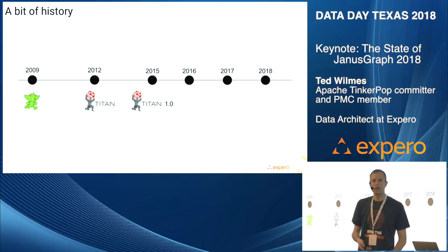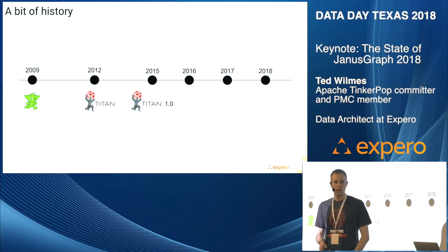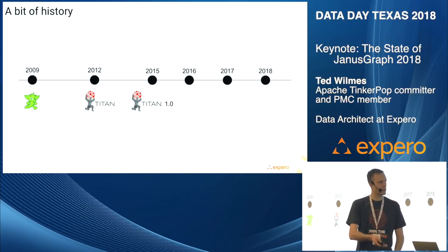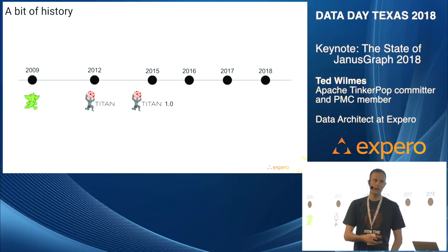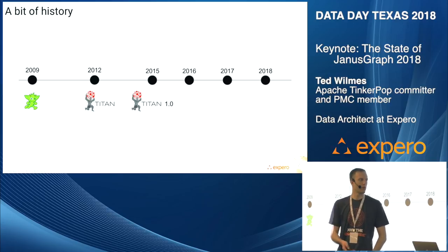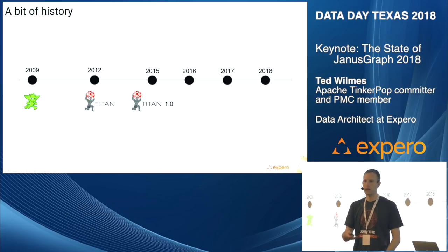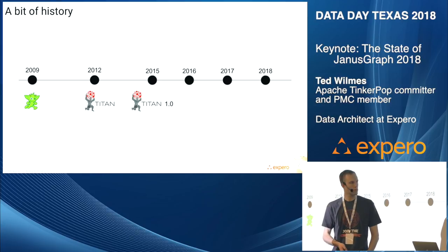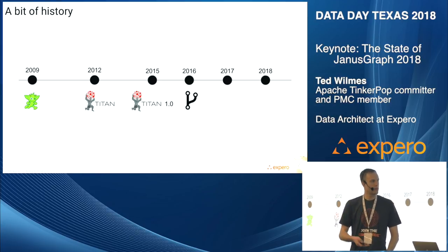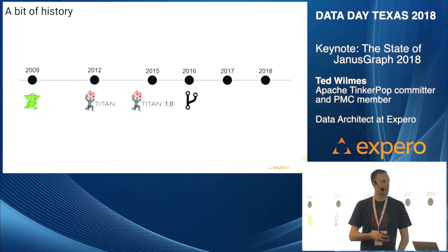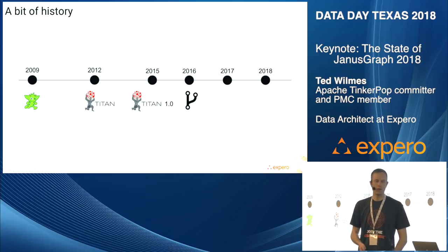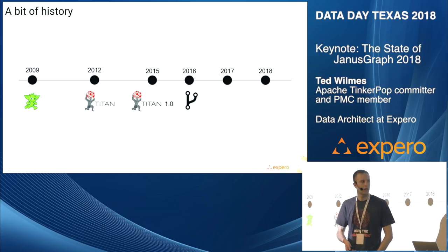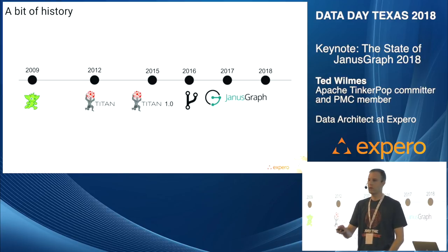Titan had a tight integration with TinkerPop. The same folks working on Titan were actually working on TinkerPop — the same team, accompanied by a company called Aurelius. In 2015, Titan had continued to gain momentum with their first release. Then a number of those folks moved over to DataStax and started to work on a new graph database called DSE Graph. Titan was popular, people were using it, but development on it kind of just stalled out. In 2015–2016, it became obvious that Titan really wasn't going to progress any further, so the members of the Titan community decided to fork Titan, and that's how we ended up with JanusGraph.